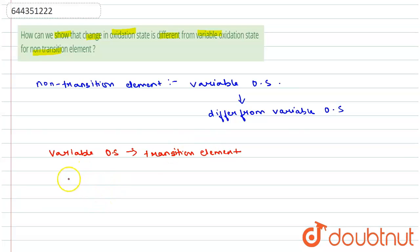For example, thallium exhibits plus one and plus three oxidation states, and lead exhibits plus two and plus four oxidation states.